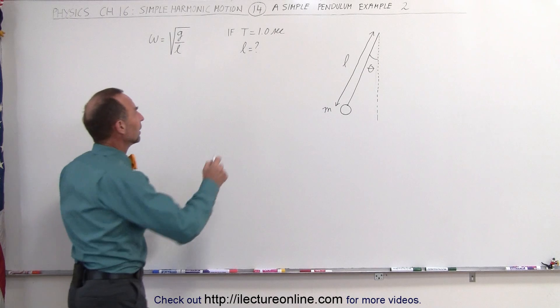We also remember that omega is equal to 2π times the frequency and that the frequency is equal to 1 over the period, which means that omega can be written as 2π times 1 over the period, or the period can be written as 2π times 1 over omega.